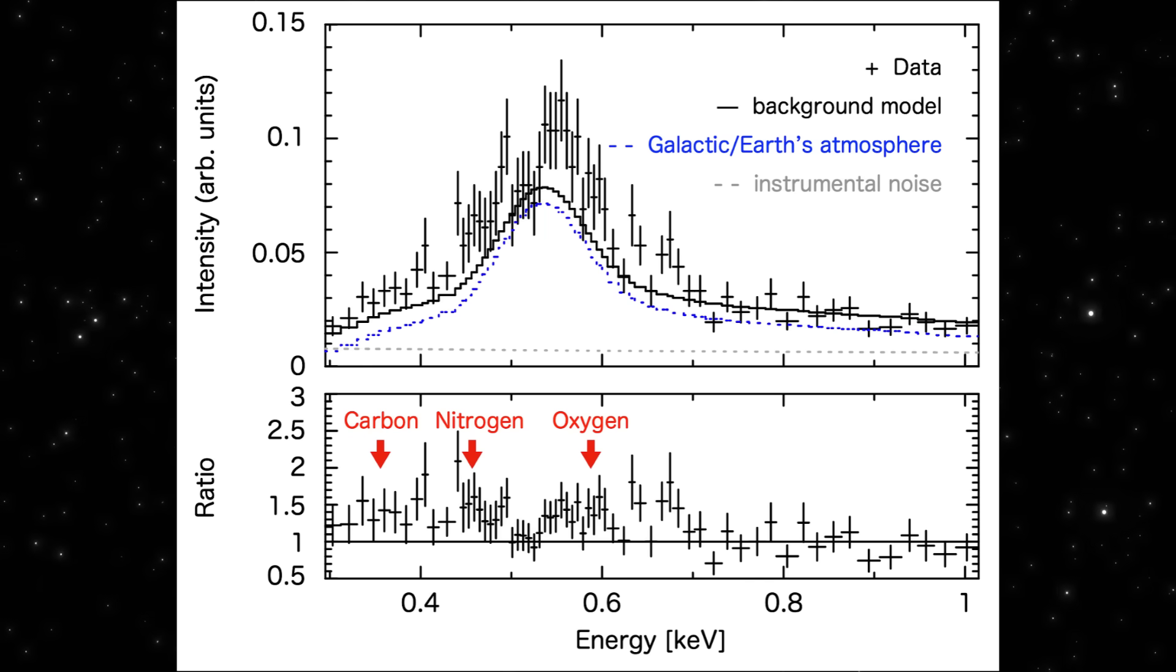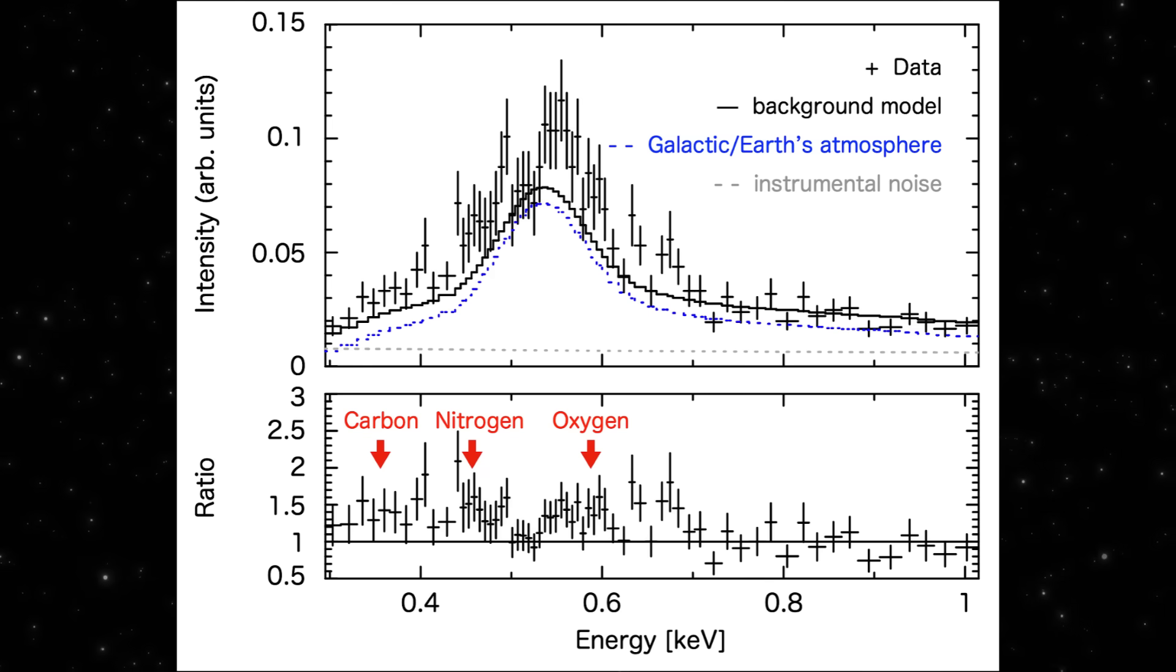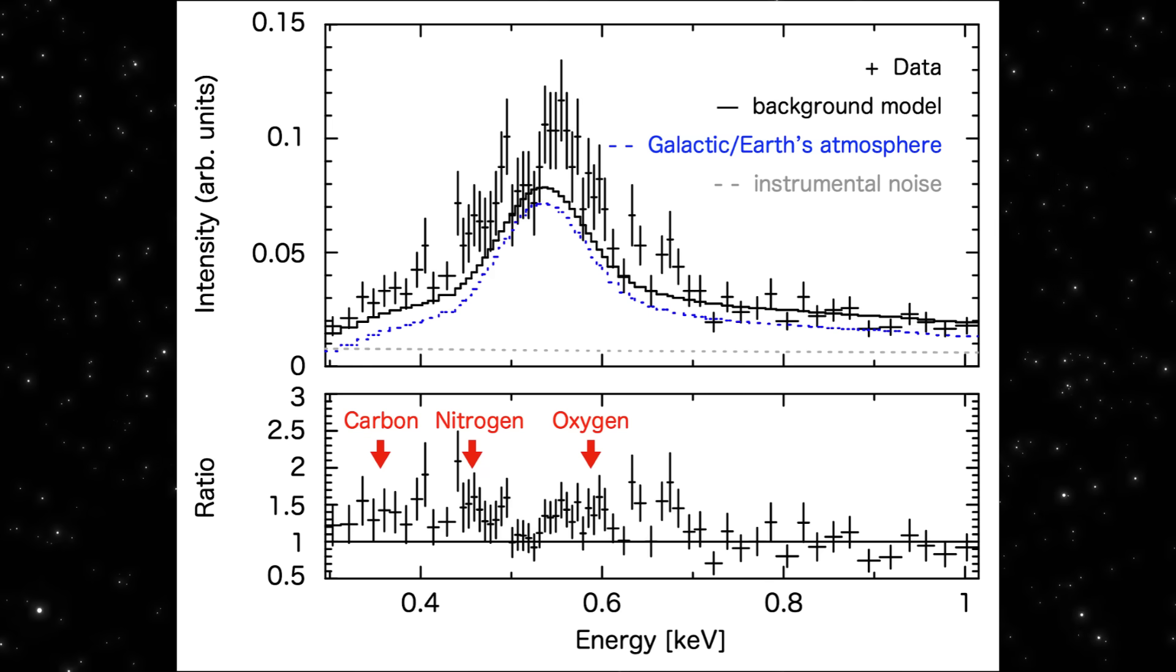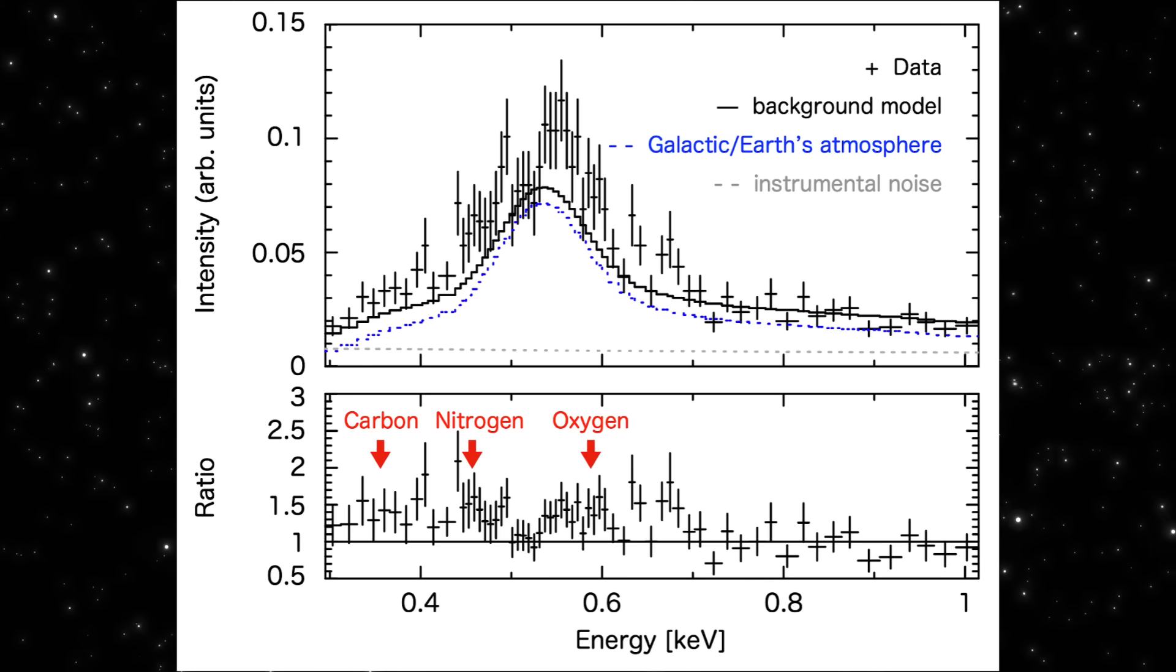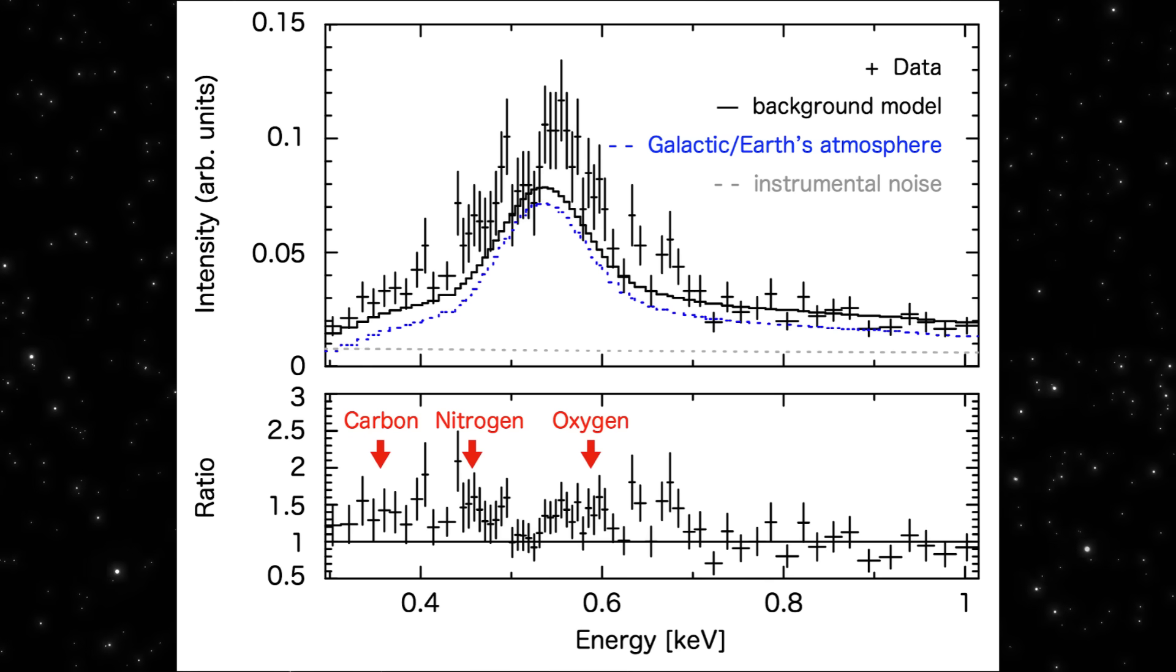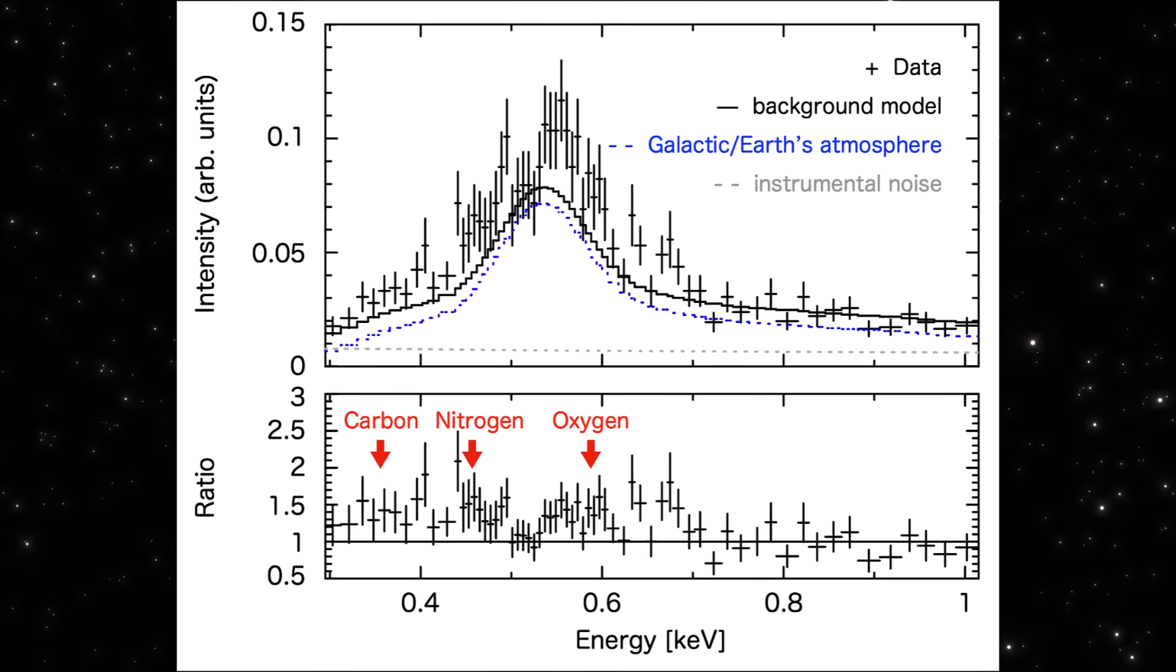Now, normally, this happens when charged solar wind particles slam into a dense cometary atmosphere. But three I-Atlas isn't behaving like a normal comet. It's small. It's moving fast. And it shouldn't have enough gas around it to create this kind of structured X-ray emission.